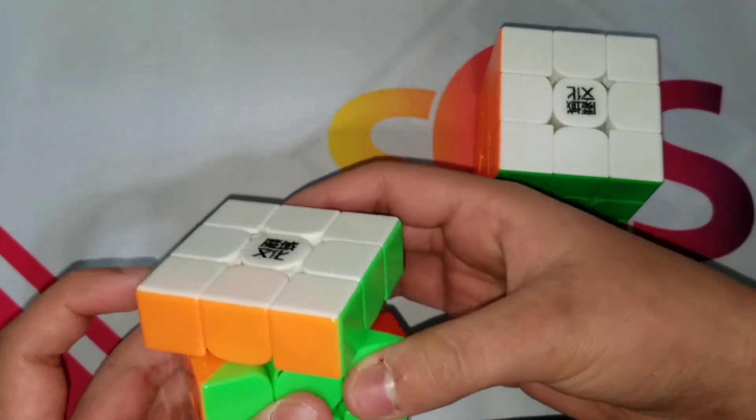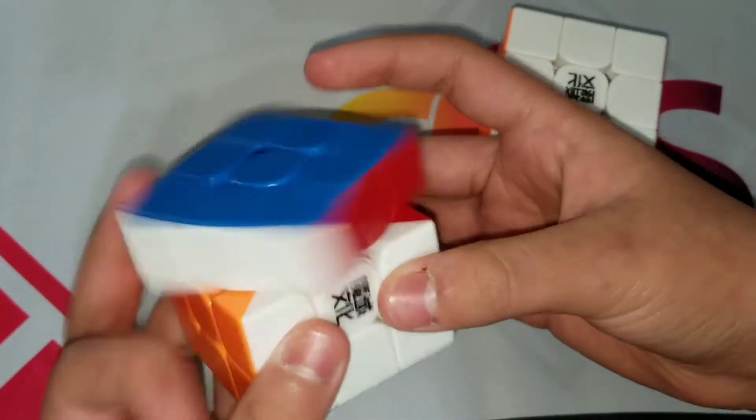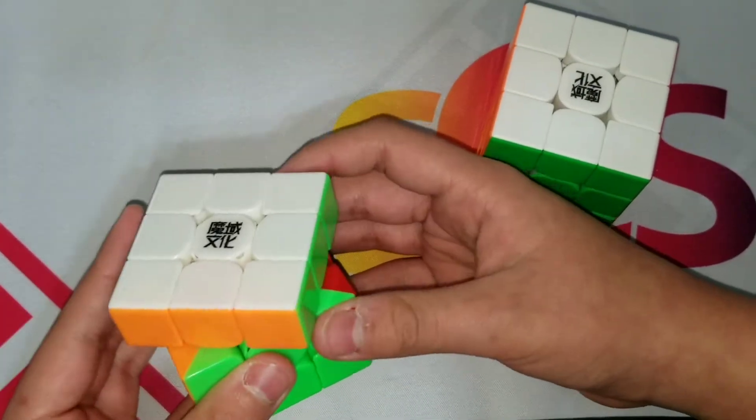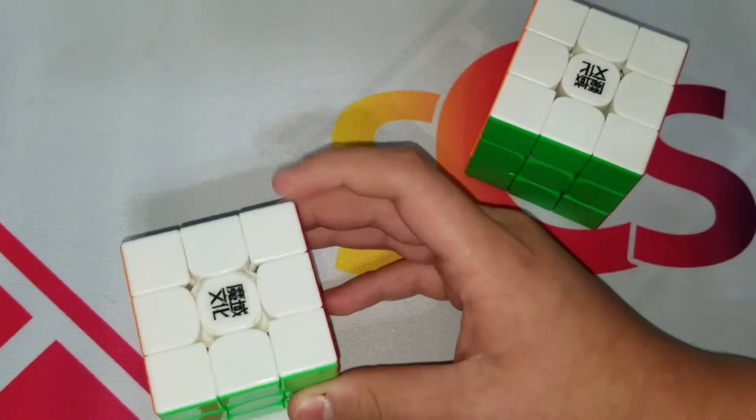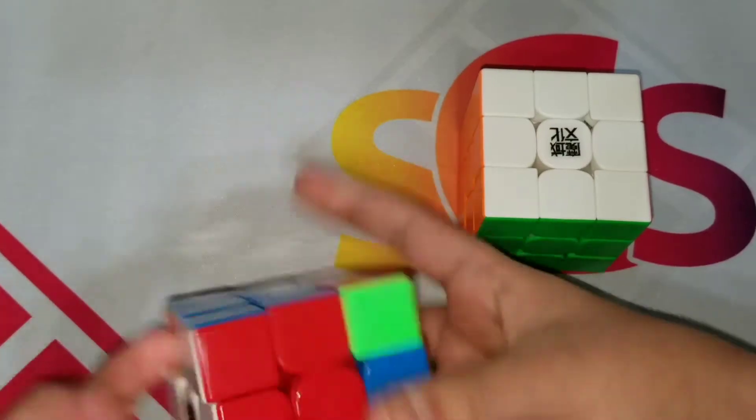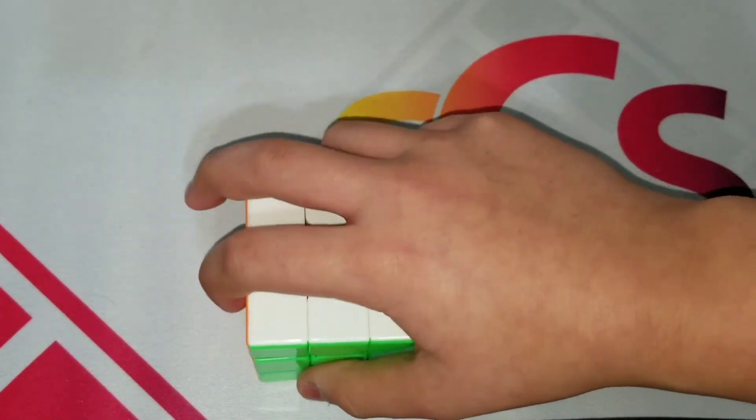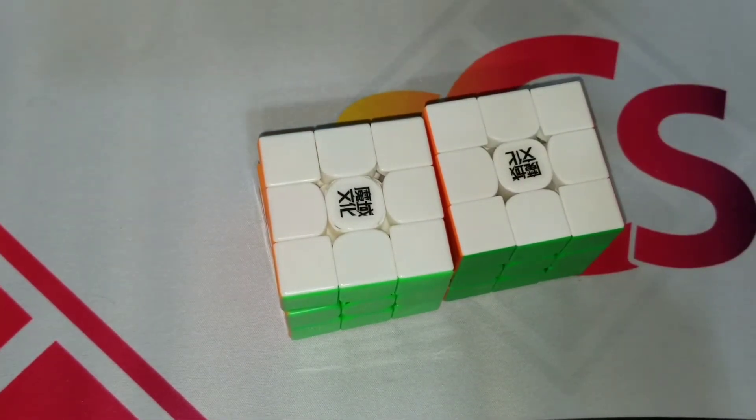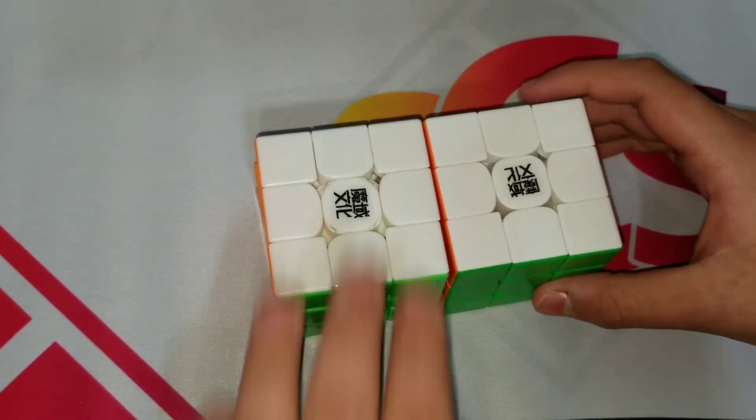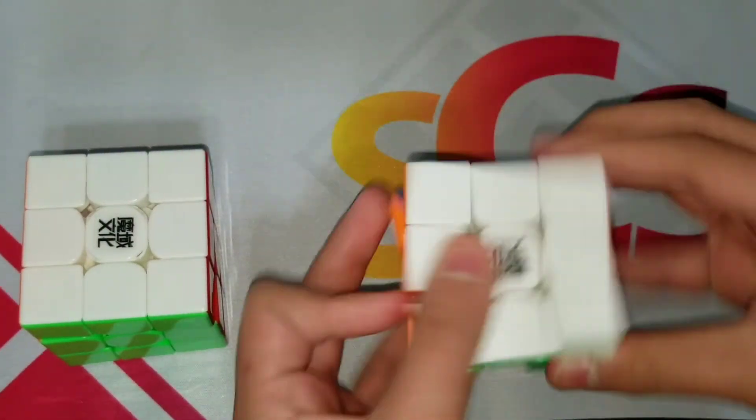On the WRM, about the same. Yeah, it's about the same. Both of these cubes corner cut almost exactly the same, so both of these are good at corner cutting because they're both exactly the same.